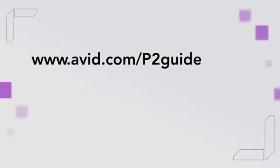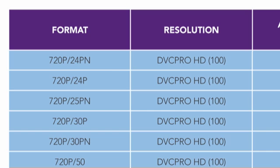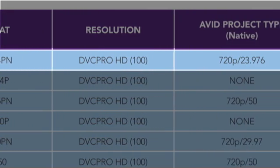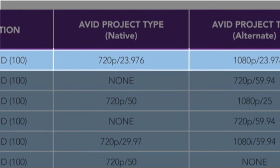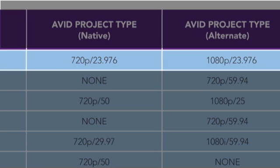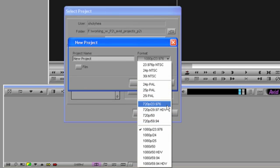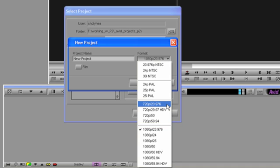As a reminder, the following steps are also covered in detail in the quick reference guide at avid.com/p2guide. In this example, we have chosen Panasonic Format 24PN. This material can be edited natively in a 720p 23.976 Avid project type, or edited as DNxHD media in a 1080p 23.976 Avid project type.